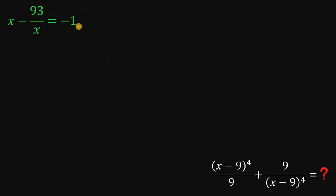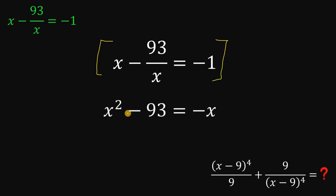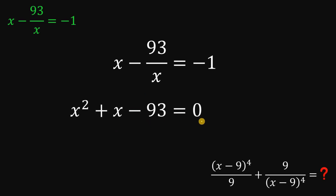So to answer this kind of question, we need the given equation, and what we're going to do is multiply all of these terms by x. If we do that, we have x squared minus 93 equals negative x. Now equating this to zero, we have x squared plus x minus 93 equals zero.